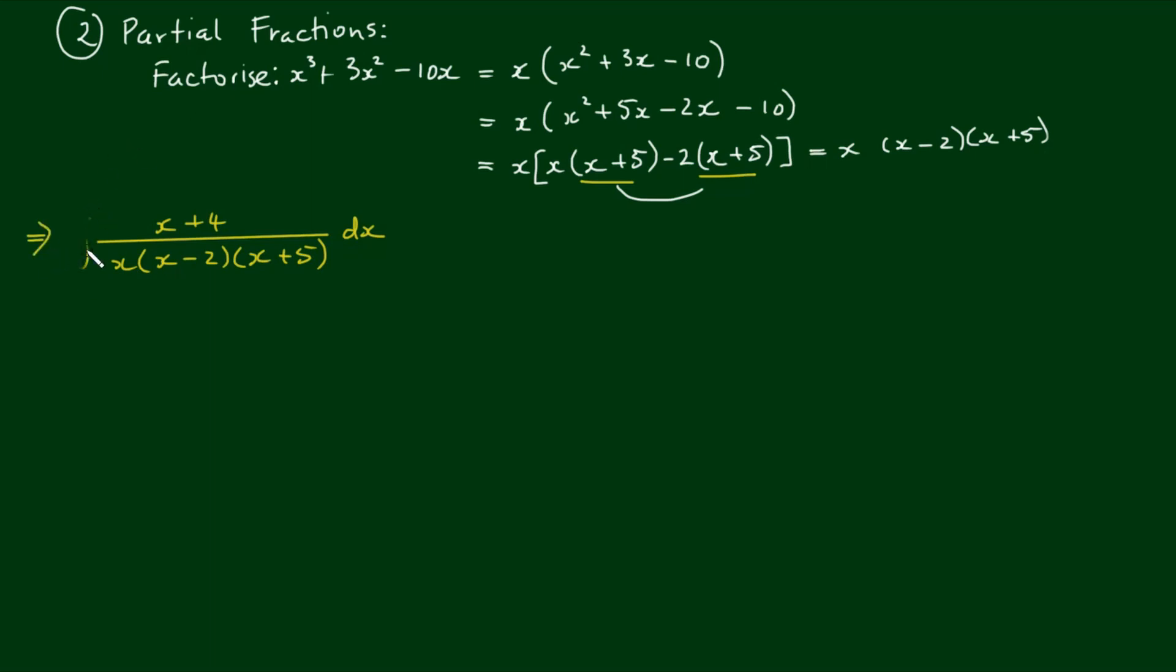This expression we can separate out into partial fractions and write this as A on x plus B on x minus 2 plus C on x plus 5, where A, B, and C are all constants. To decompose the left-hand side, I can either use the method of undetermined coefficients, which is quite lengthy, or I can take a shortcut and use the cover-up rule or formula.